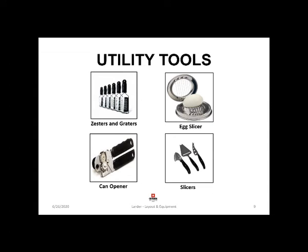Utility equipment are a range of tools used in larder kitchen for various tasks. They not only do the job efficiently but also help to get a consistent product. For example, zester and grater, egg slicer, can opener and other slicers.